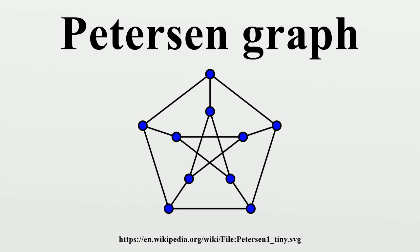who in 1898 constructed it to be the smallest bridgeless cubic graph with no three-edge coloring. Although the graph is generally credited to Petersen, it had in fact first appeared 12 years earlier, in a paper by A. B. Kemp.